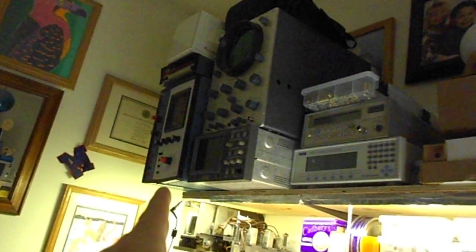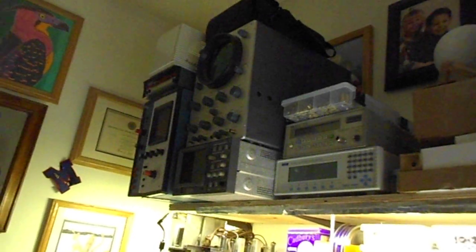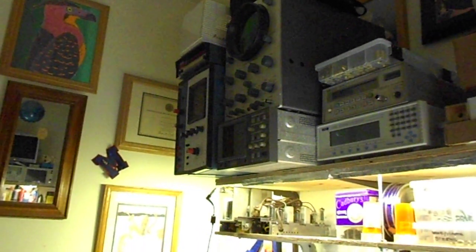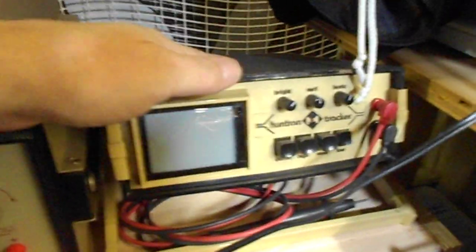This box here is a Heath kit Bell and Howell 10 megahertz oscilloscope, but it's 20 inches deep. I have this Huntron tracker. This is the perfect size. This thing is just the neatest little device.